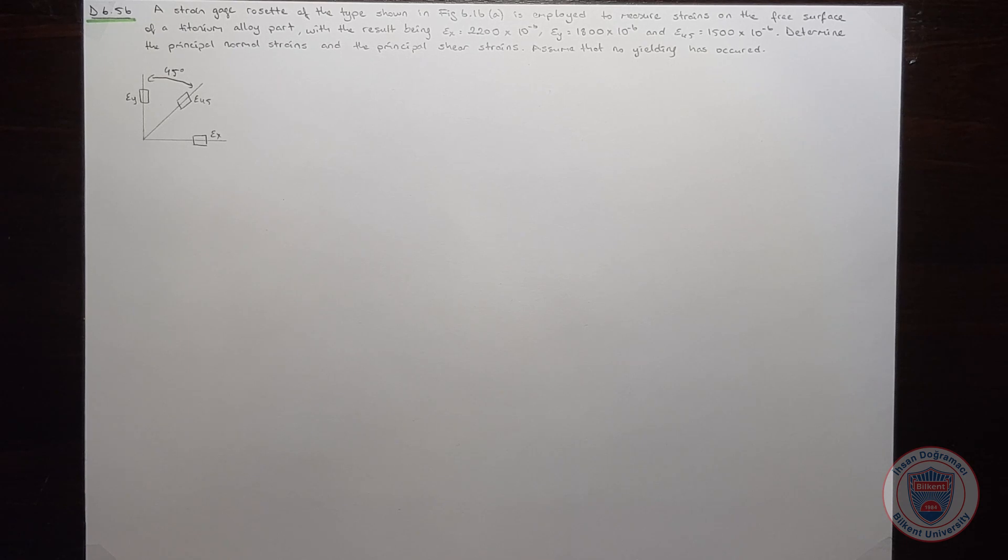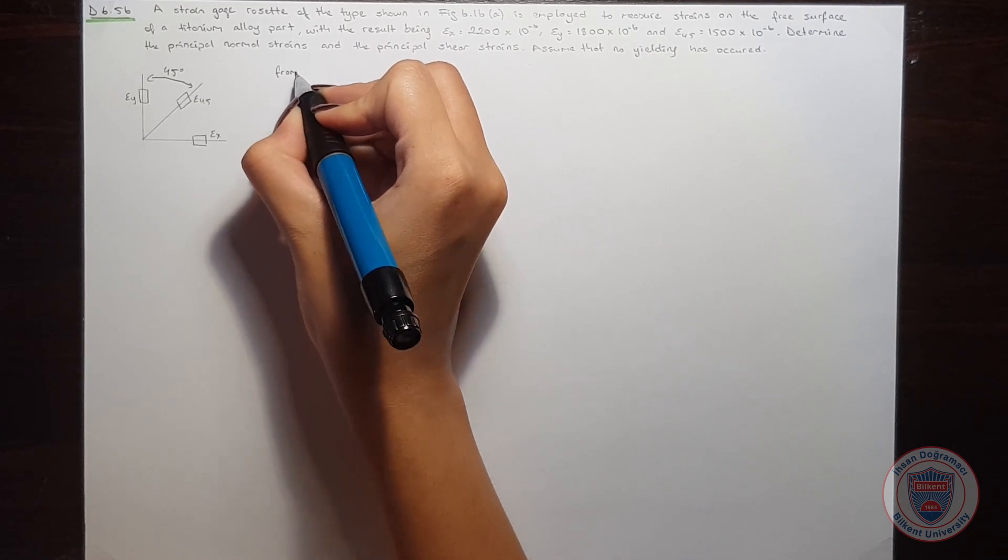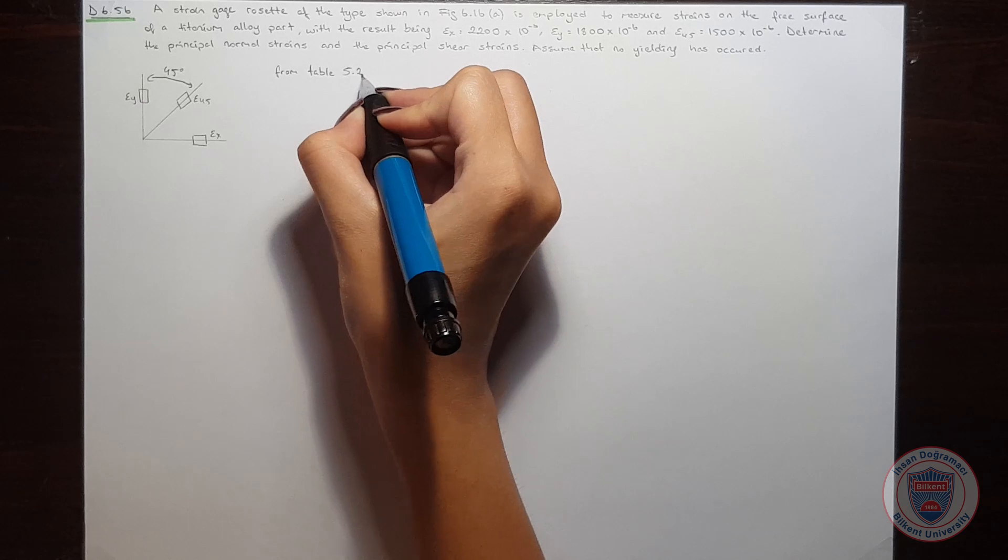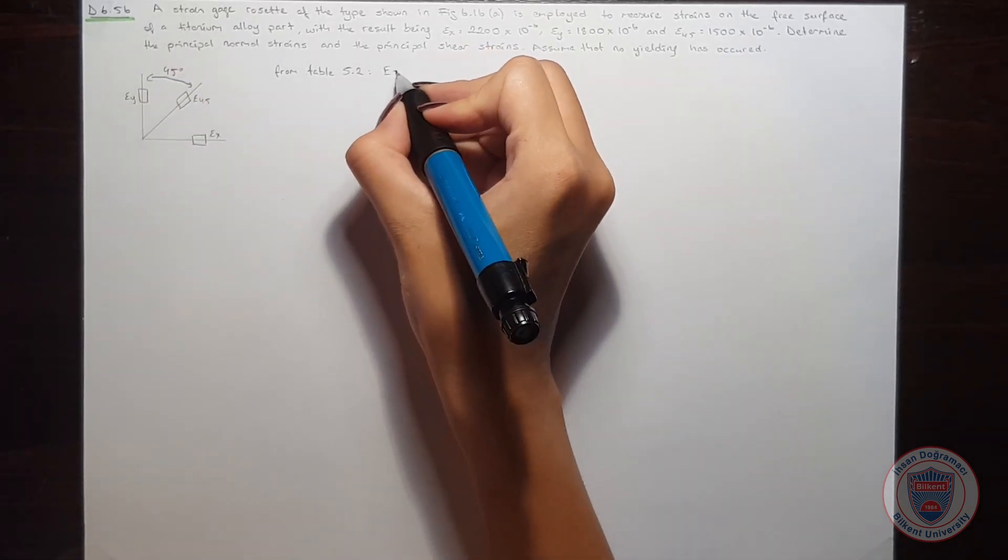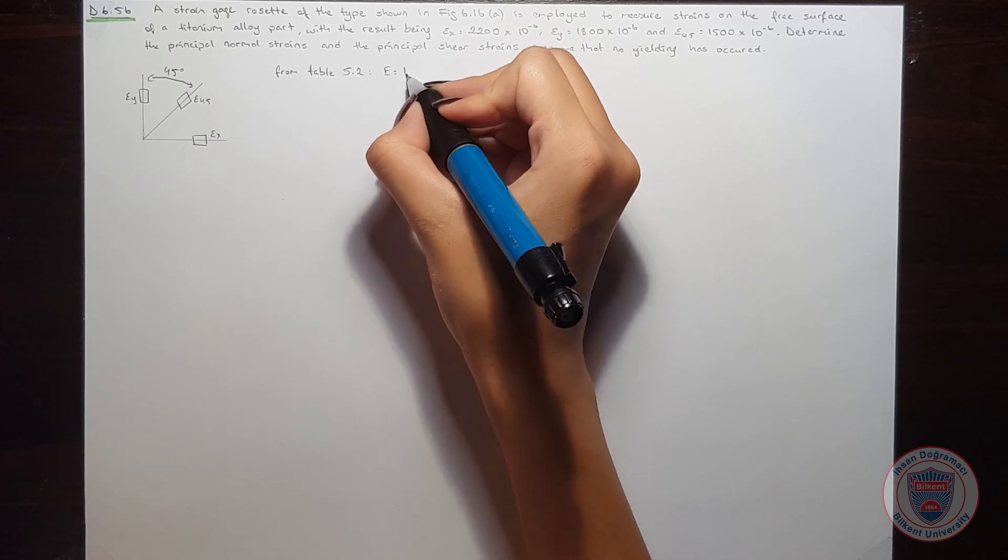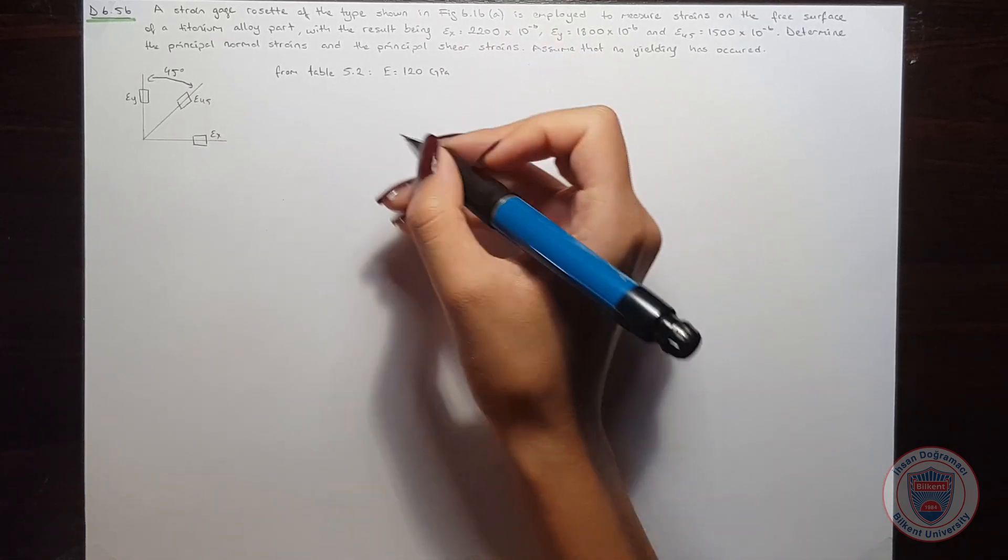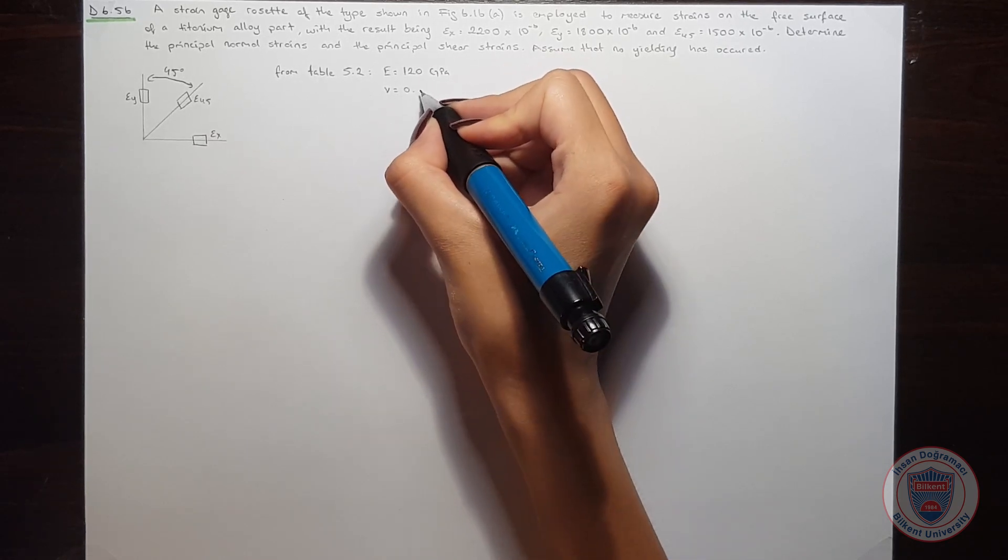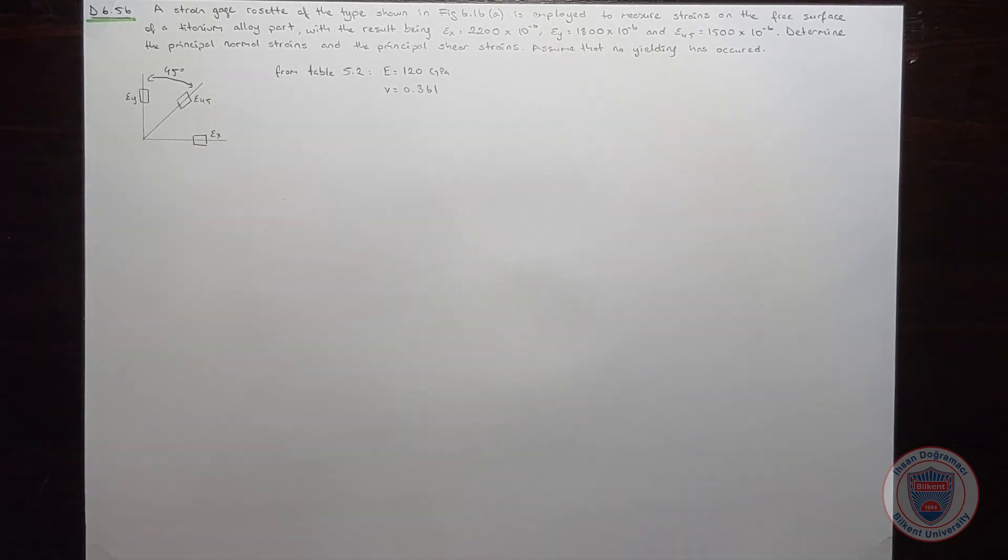I will write the material properties for titanium alloy. From table 5.2, we obtain Young's modulus is equal to 120 GPa and Poisson's ratio is equal to 0.361 for a titanium alloy.